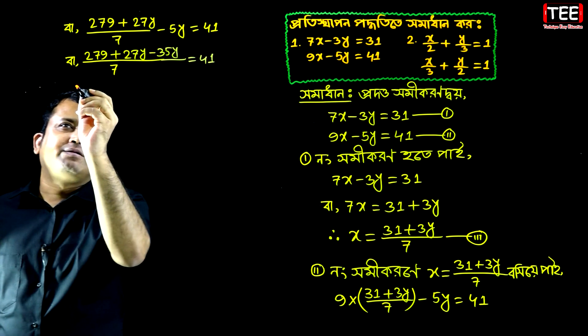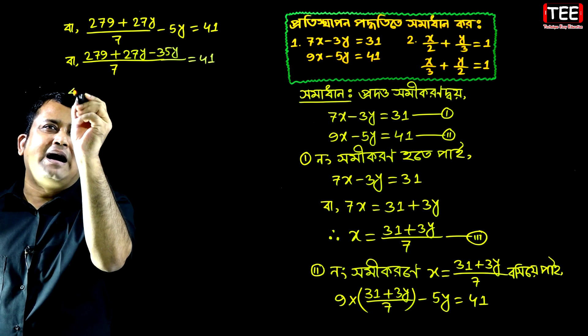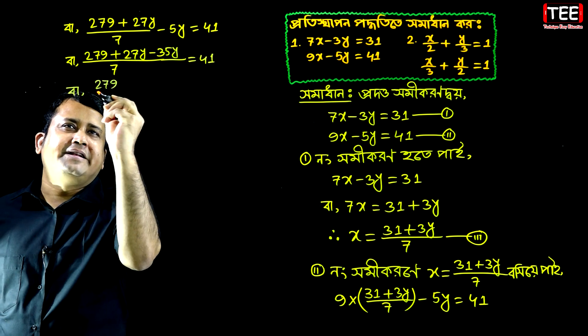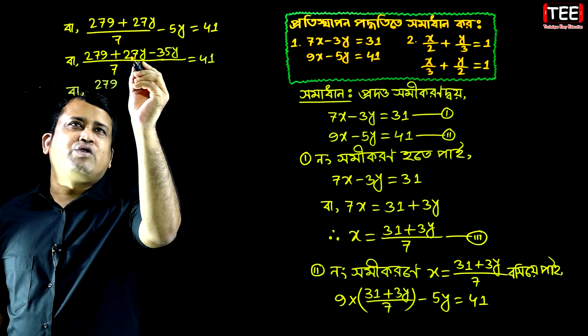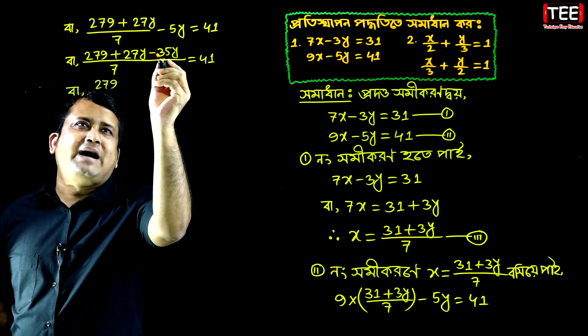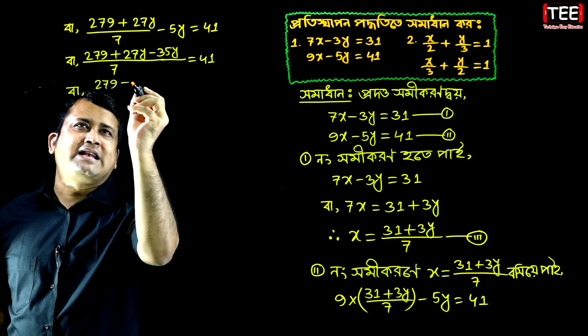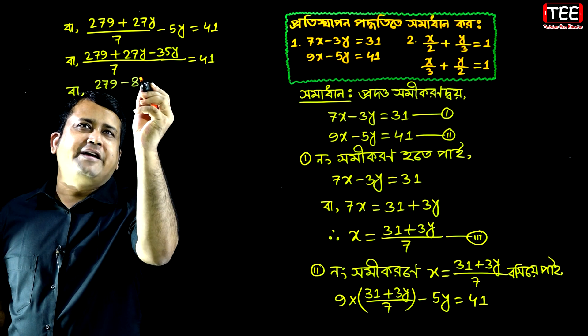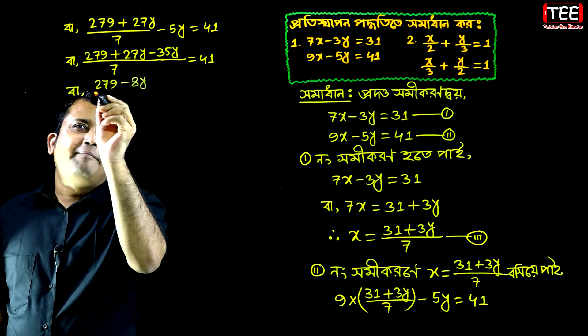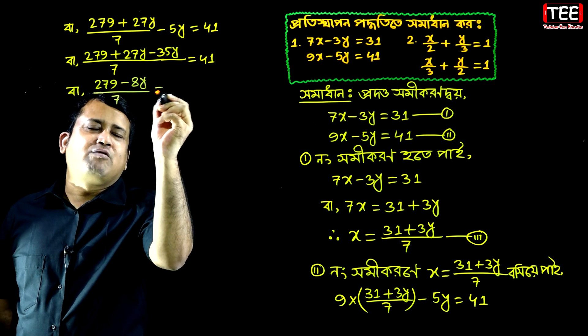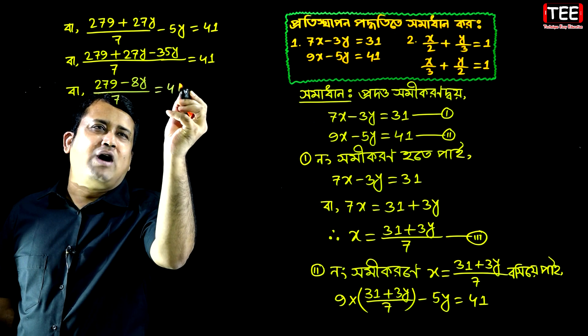Let's see — we have 5 bar 279, and 27y minus 35y gives minus 8y, plus 7 is equal to 41.